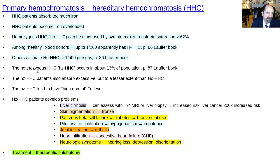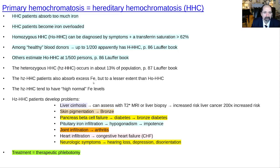A person can be heterozygous — one copy of the HHC gene from one parent — abbreviated HZ-HHC. That occurs in more than 10% of the population. They absorb more iron than they should, but not as much as the homozygous form. Heterozygous carriers tend to have high-normal iron levels that are bad for health, but not overtly making them very sick at a young age.